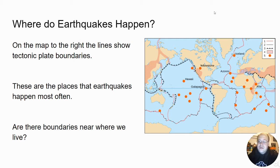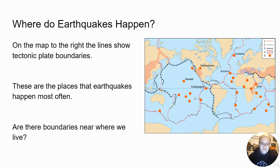Here on the map is an image of where all the plate boundaries are in the world — not all of them, but a lot of them. These are where earthquakes happen most often. You can see certain lines where the most activity is. The red dots are considered hotspots — spots where there is higher volcanic activity than normal. For instance, Hawaii and Iceland are examples of that, and there's also a lot of tectonic activity and earthquakes there as well.